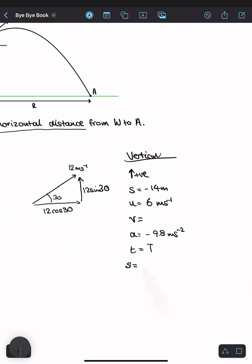Well, that's just S equals UT plus half AT squared. So if I sub in my values, I have negative 14 equals 6T minus 4.9T squared. And if I solve for T, this quadratic, I get T is 2.41 and so on, or negative 1.1, so on.